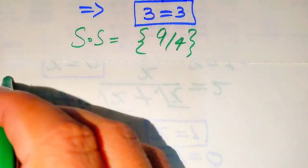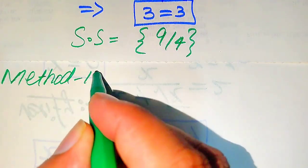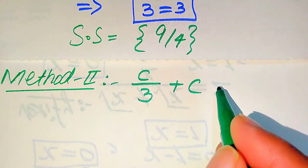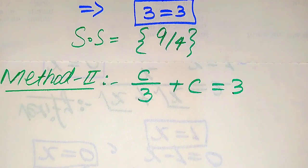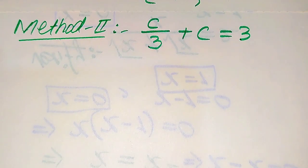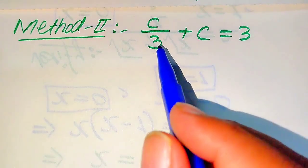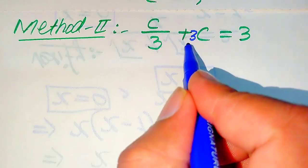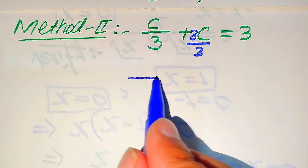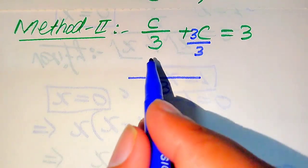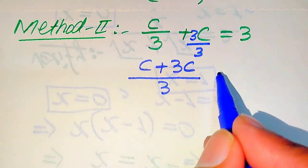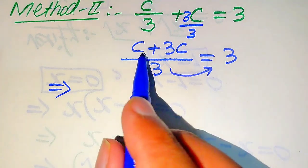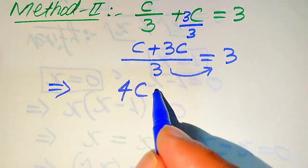Now we solve this problem using a second method. The given equation is C divided by 3 plus C equals 3. In this method, we make the denominators of both terms the same. The first term has denominator 3; to make the second term also have denominator 3, we multiply and divide C by 3. Now both terms have denominator 3, so we take the LCM, which is 3, giving C plus 3C.